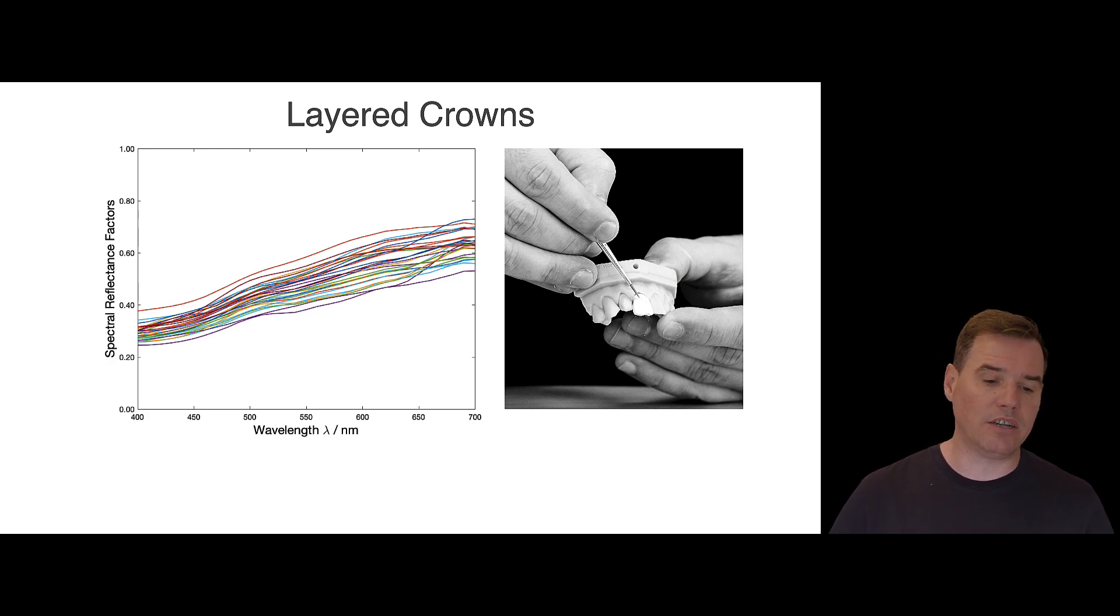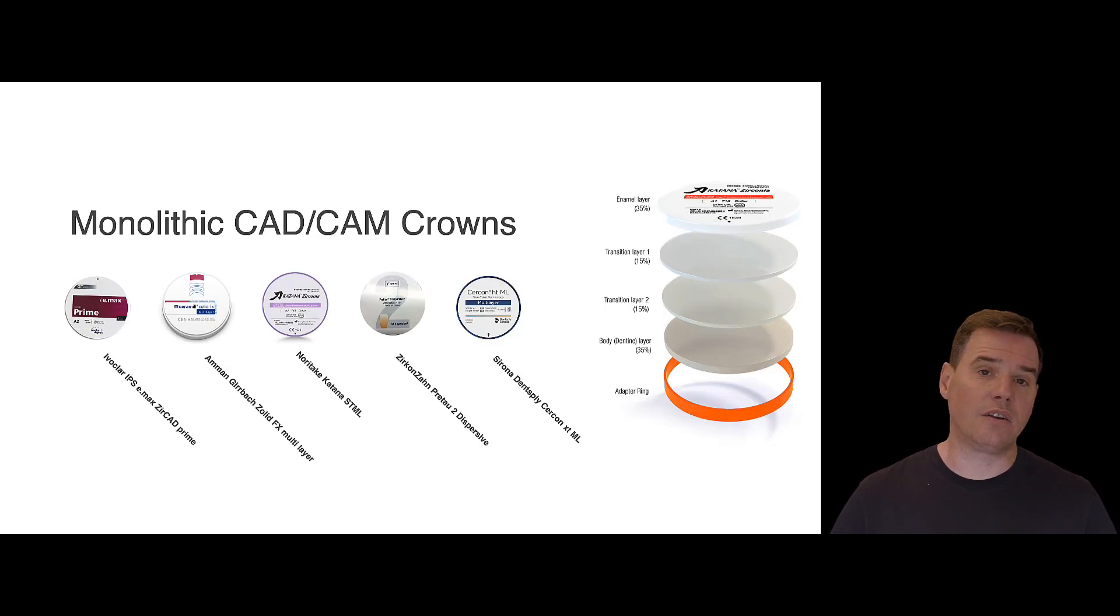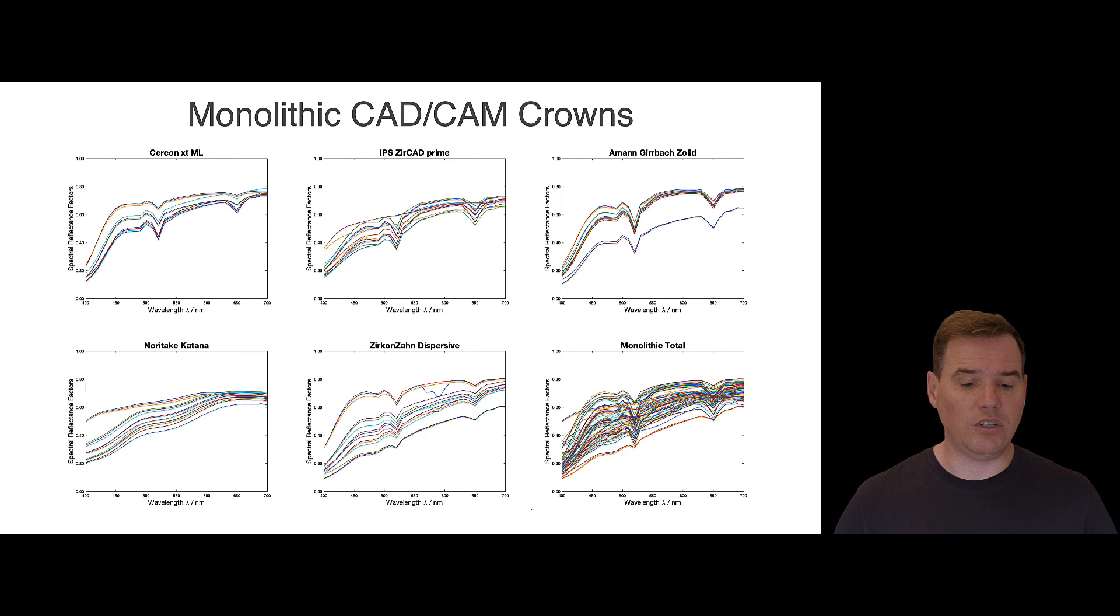So the first thing that we did is we gathered a bunch of hand-layered polychromatic crowns that I had made over the years and we measured the spectral reflectance factors of these hand-layered zirconia restorations. And then we had single anterior crowns milled from the materials of different manufacturers. So we included IPS-EMEX circuit prime, M-angebosolid FX multilayer, Noritaki Katana STML, the Zircon-Sarm Pretal II dispersive at the time, and Sirona Densplite Zircon XTML. And we milled maxillary single anterior crowns out of these materials in the shades A1 to A4. And then we measured the spectral reflectance factors, which you can see here.